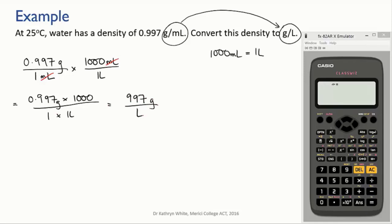If you think about it, this makes sense. If one milliliter has a mass of 0.997 grams, then 1,000 milliliters—that's a liter—must have a mass of 1,000 times that, which is 997 grams. It's always good to do a common sense check of your calculations when you've done a conversion.